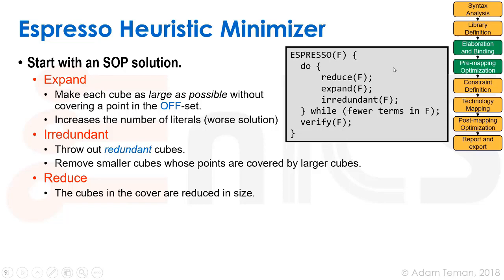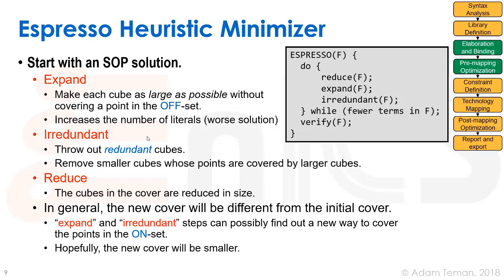Here's pseudocode for this algorithm. We have a do-while loop: we iteratively reduce, expand, and irredundant, keeping on doing this as long as we're able to get to a better solution. We throw out solutions that are not better, and finally at some point we stop. This is a heuristic — our new cover is going to be different from the initial cover. It may not always be better, but we're trying in different dimensions with many, many dimensions in our solution. Hopefully we'll find a better cover each time with fewer literals.